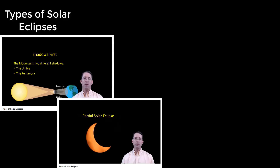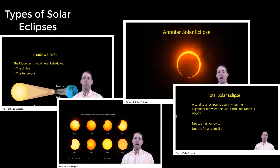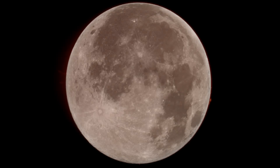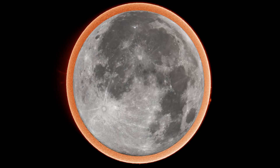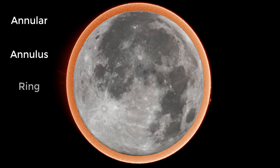If you've watched the video on the different types of solar eclipses, then you already know that an annular solar eclipse happens when the moon is a little bit further away from us in its orbit. Because it's further away, it appears smaller, and the moon does not block the entire disk of the sun. Instead, what you get looks like a ring of fire. The word annular comes from the word annulus, which means ring.